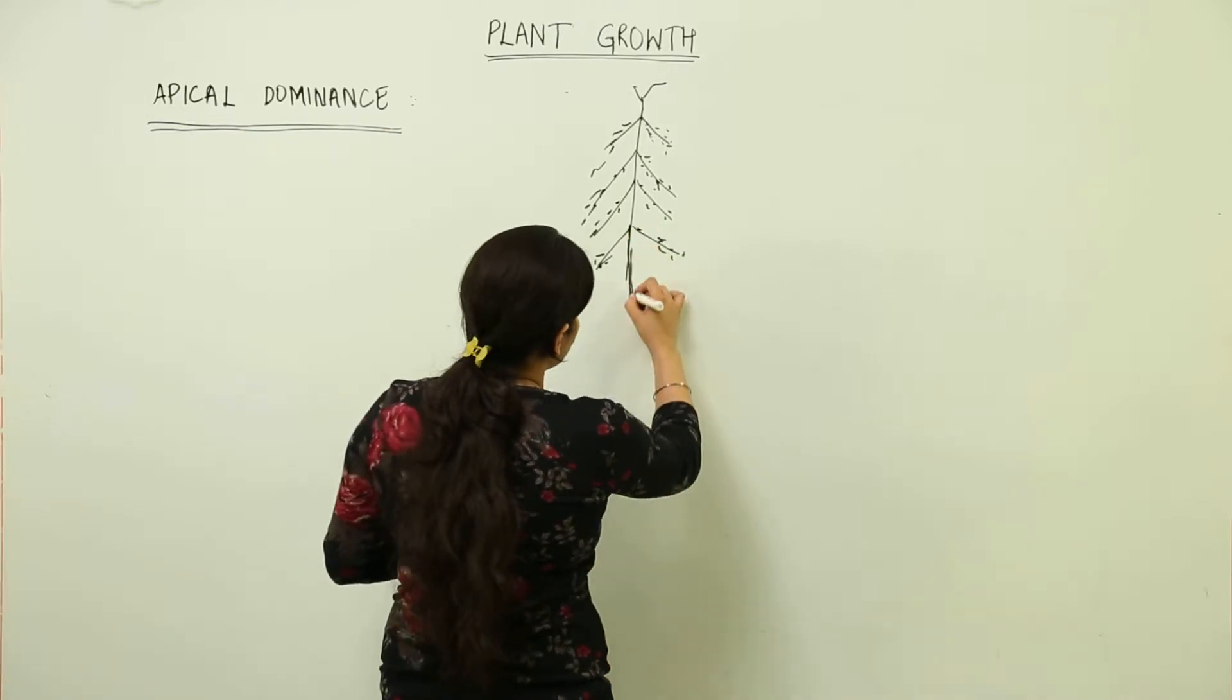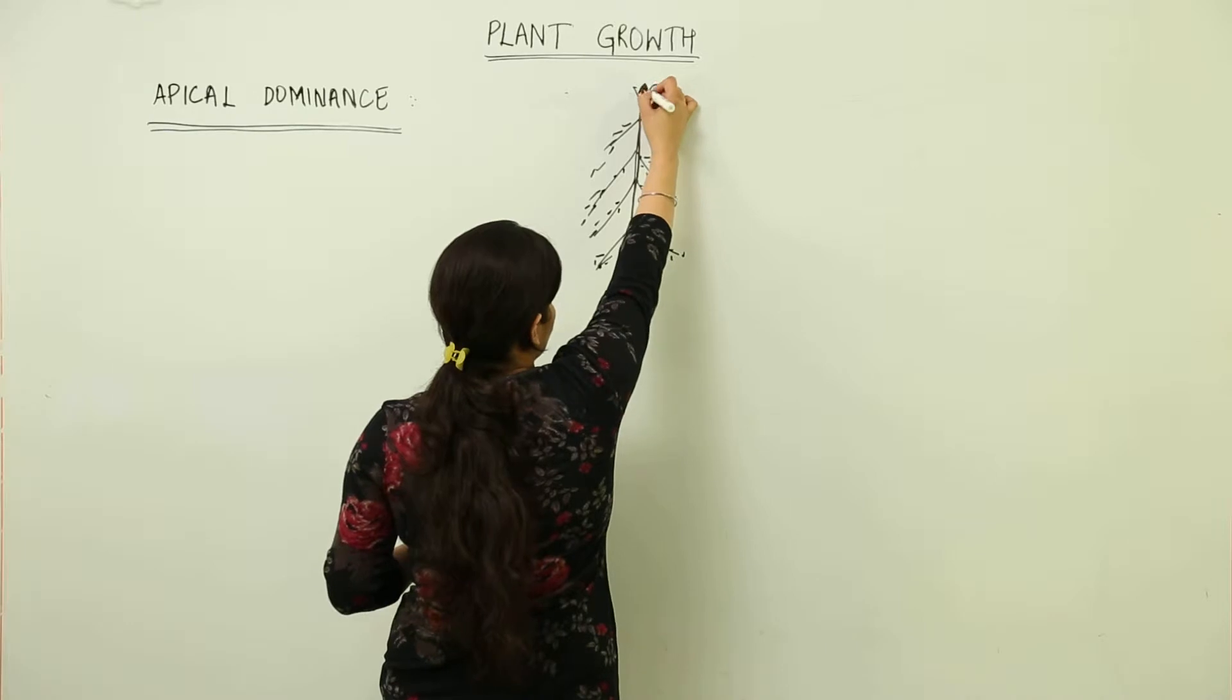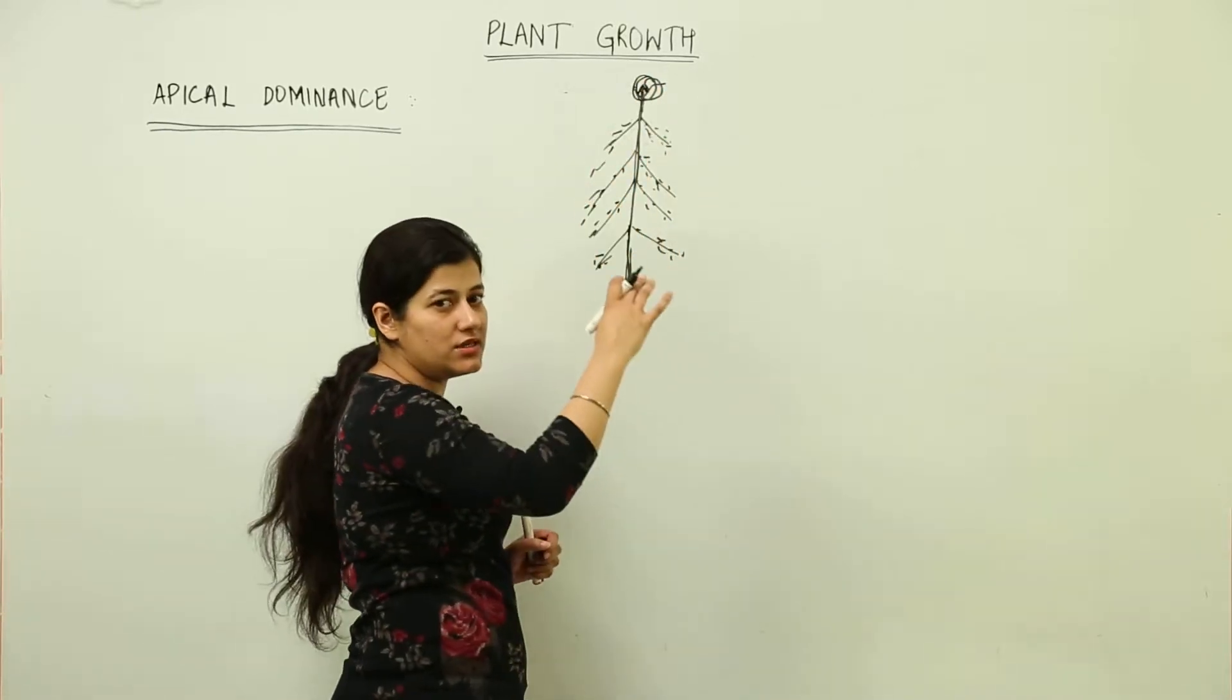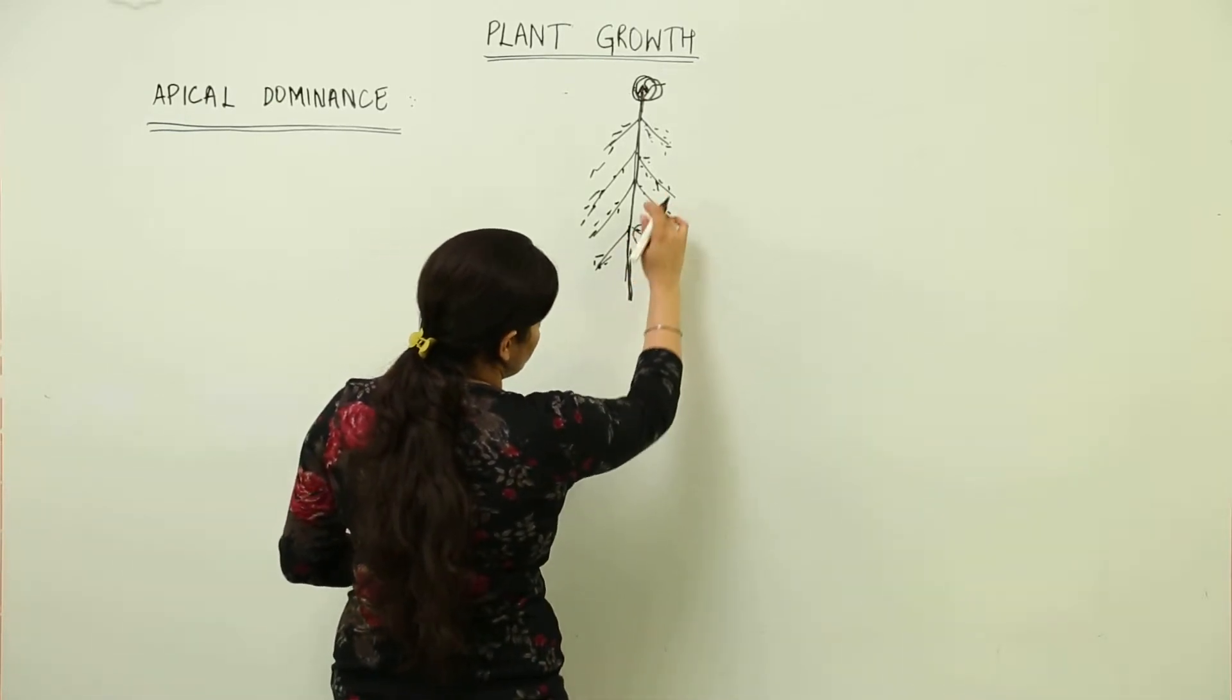Now this is the tree - you can see this is the main apex. This is the shoot apex as we call it. This shoot apex always has the tendency to rise higher as compared to these shoots.